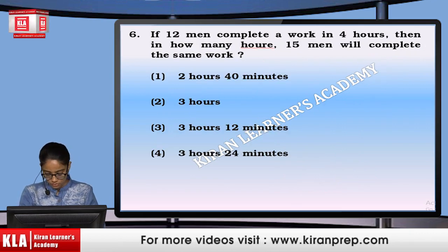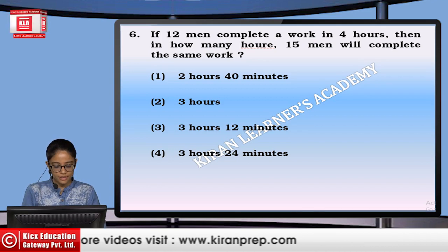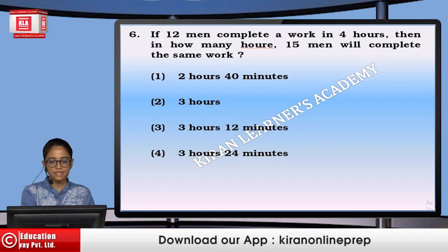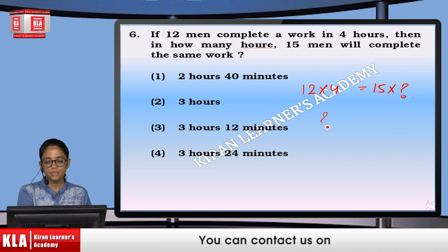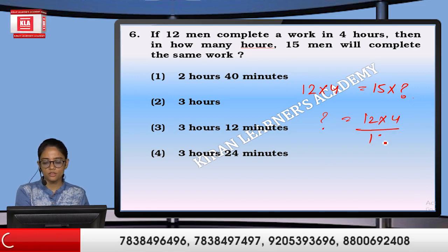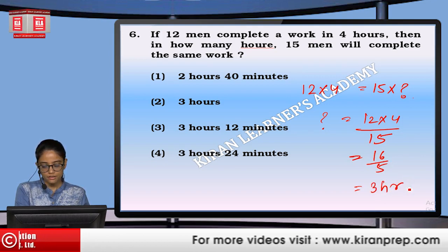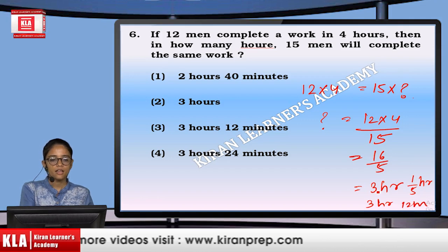If 12 men complete a work in 4 hours, in how many hours will 15 men complete the same work? Since the total work is the same, 12 into 4 equals 15 into the unknown hours. So the unknown equals 12 into 4 divided by 15, which is 16 over 5, equal to 3 hours and one-fifth of an hour — that is 3 hours and 12 minutes. Option number 3.